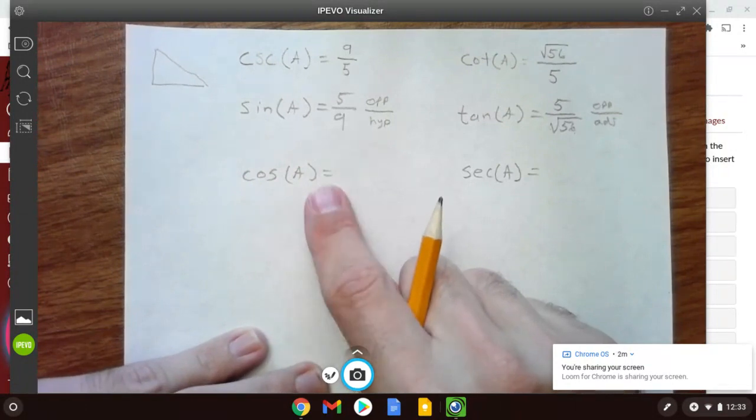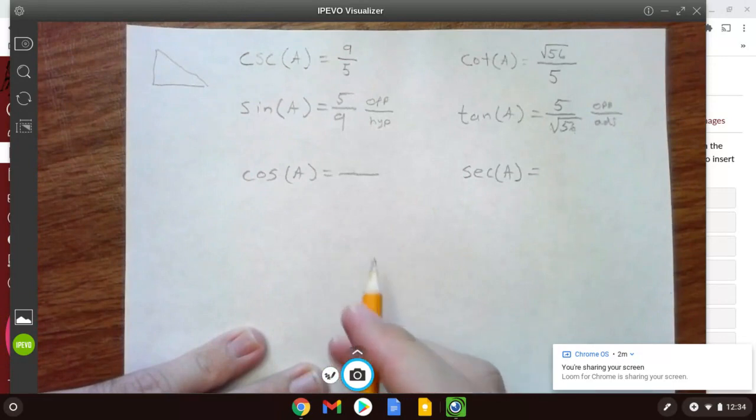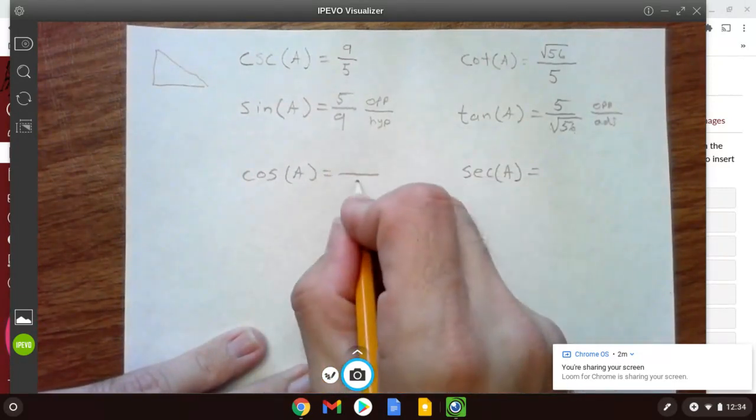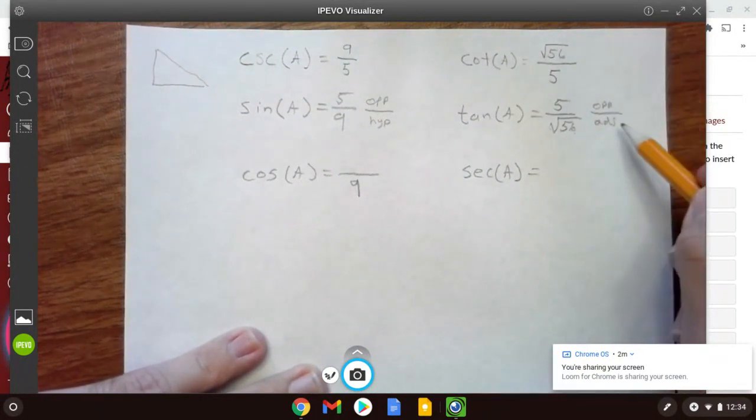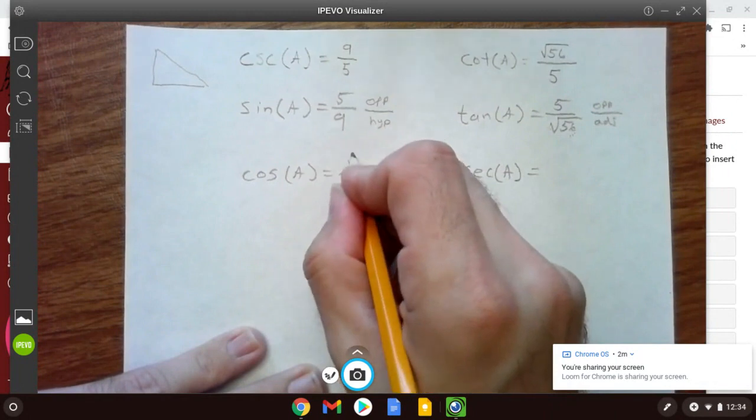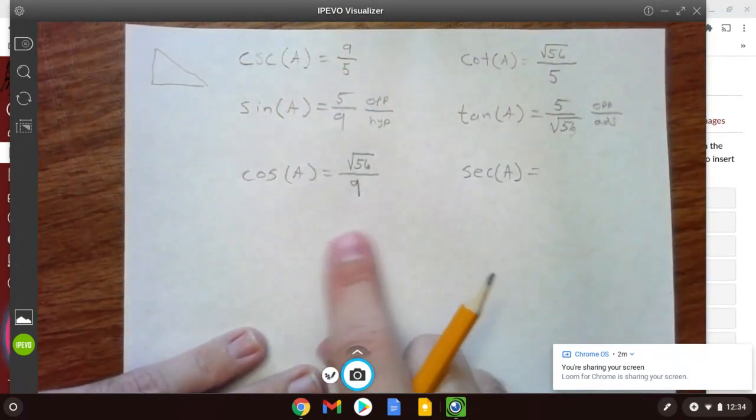So remember, cosine is equal to adjacent over hypotenuse. Well, the hypotenuse is going to be 9 here, and the adjacent side is going to be this root 56, square root of 56. And I don't have to do any of those triangles.